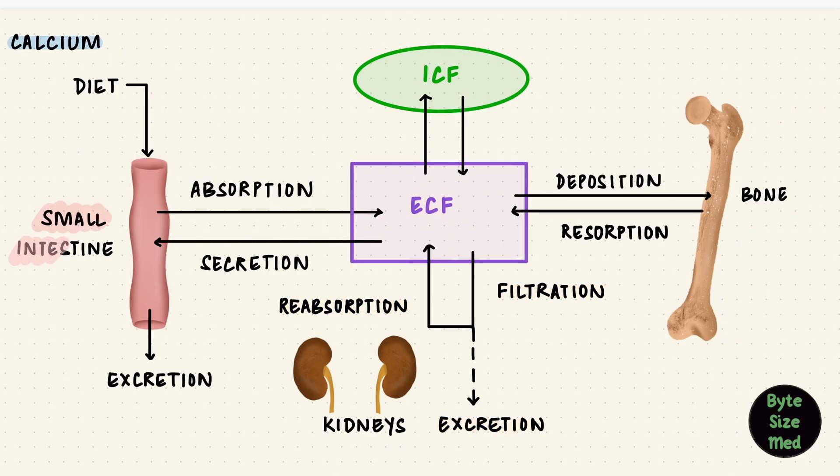These three organs, that's the small intestine, bones, and the kidneys, are thus used to regulate calcium. Like if plasma calcium is low, the body will absorb more calcium from the small intestine, reabsorb more from the kidney so that less gets excreted, and it can also take it out of bone. The opposite if plasma calcium is high. The concentration of calcium in the ECF changes what happens. Also, the changed calcium concentration sets off hormones that can act on these organs and try to fix things.